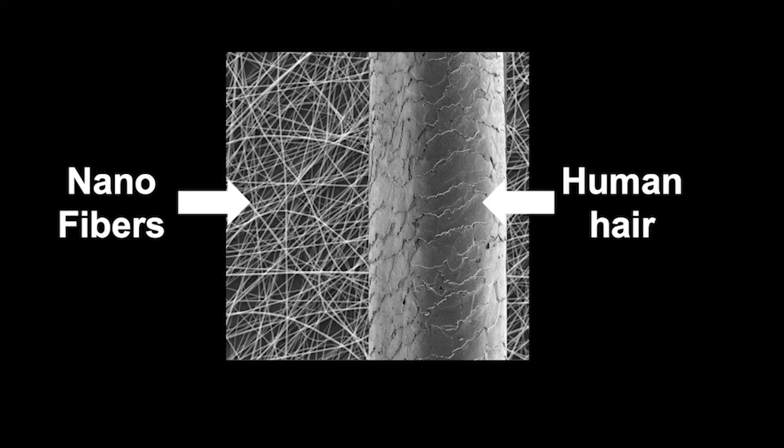Let's take a closer look at nanofibers under the microscope. A human hair with a diameter on average of 60 to 70 micrometers is compared with nanofibers here. Nanofibers are more or less a hundred times smaller than a human hair.